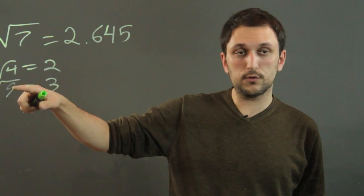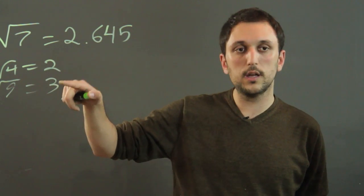So the square root of 7 is a little bit closer to 9 than it is to 4, so it's a little bit closer to 3 than it is to 2.